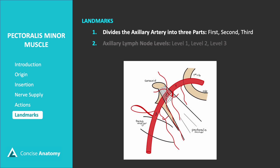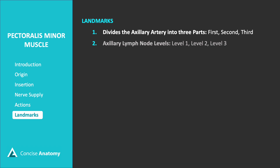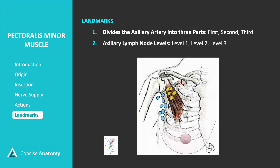The pectoralis minor muscle serves as an important anatomical landmark in the axillary region, dividing the axillary artery into three parts. The first part is located proximal to the muscle, the second part runs beneath it, and the third part is located distal to it, after the artery exits behind the muscle.